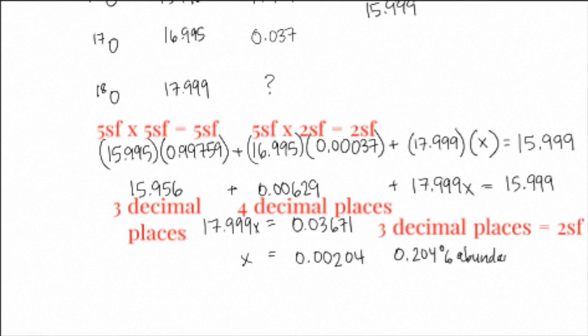Now, in this last step, we take our 15.999 on the right, we subtract the 15.956 and the 0.00629. That means we've got a number with three decimal places, three decimal places, four decimal places. We're going to have to round it off to the third decimal place to be consistent here. So in our 0.03671, it would really be 0.036, or in other words, two sig figs. When we do the last step, which is division, we've got two sig figs divided by five sig figs, our answer should have two sig figs, and we should write 0.20% abundance, not 0.204.